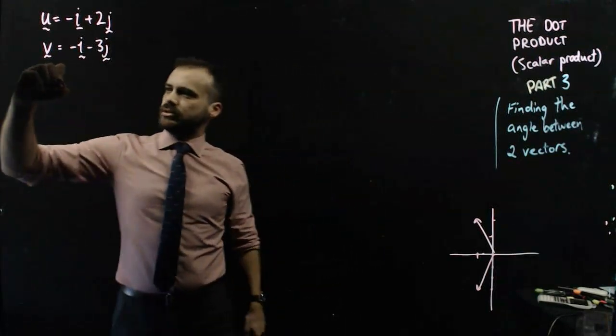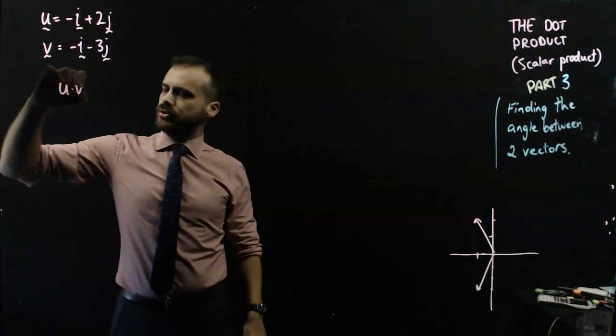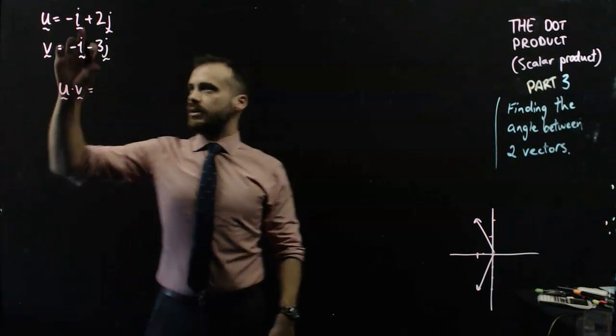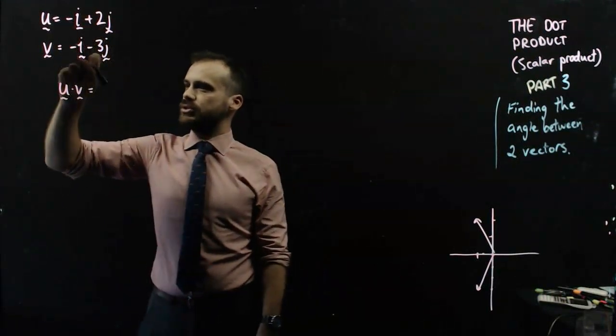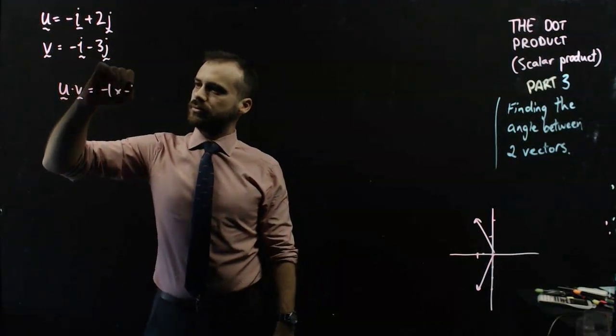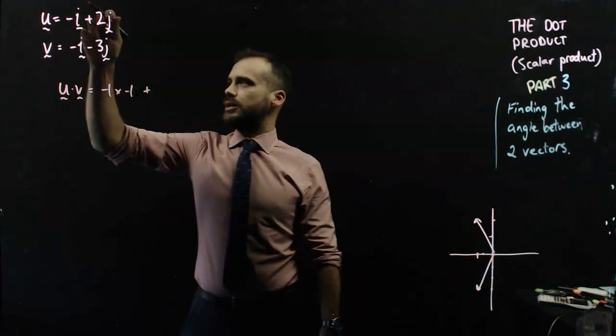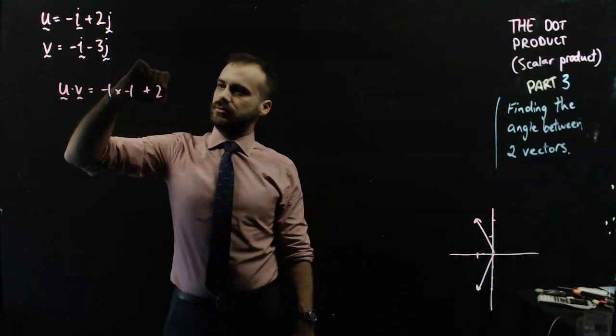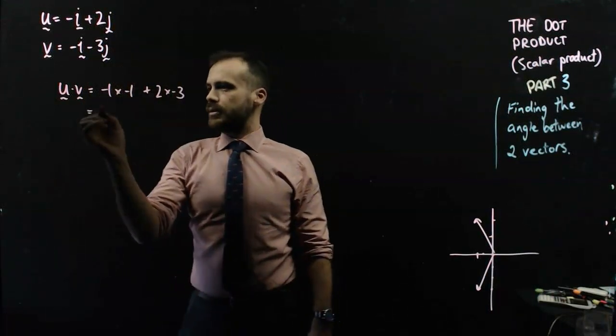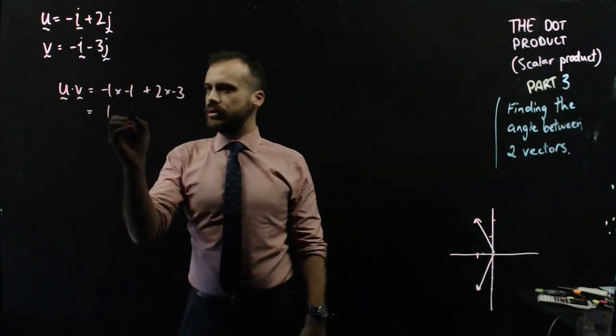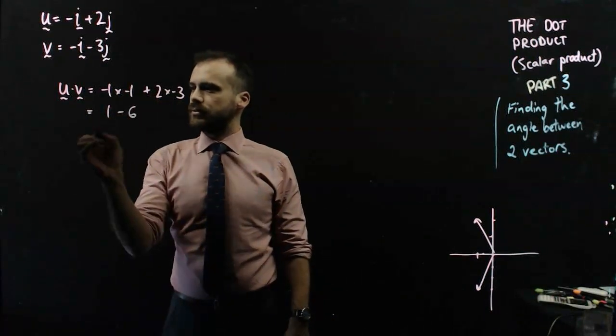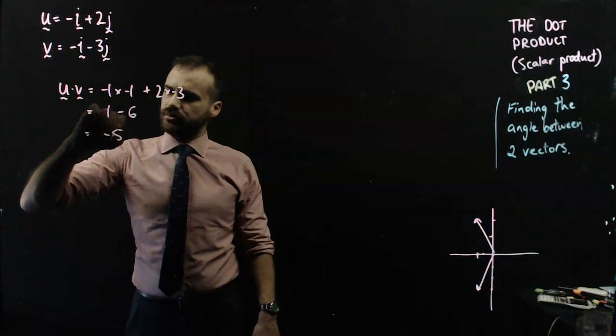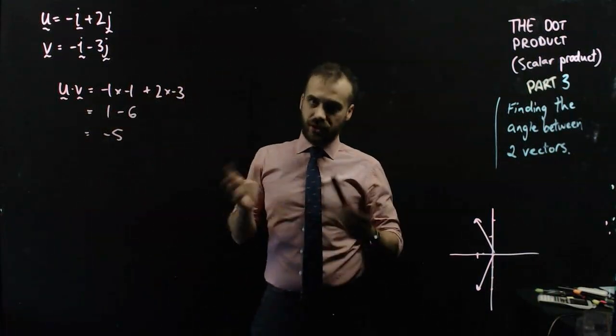I'm going to use my dot product, u dot v, and I'm just going to do it by multiplying my coefficients. So, negative 1 times negative 1 plus 2 times negative 3. Negative 1 times negative 1 is 1 plus 2 times negative 3, that's negative 6. And I get a dot product of negative 5.